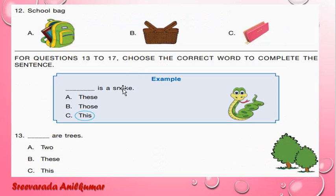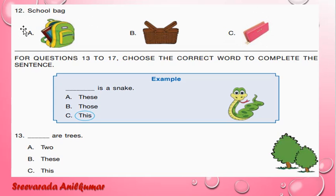Twelfth one: School bag — this is a basket, this is a pencil box, this is a school bag. A is the correct answer.